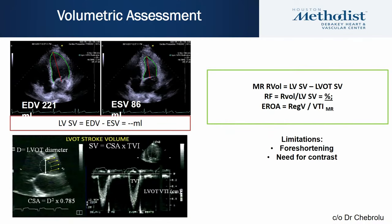Another volumetric method subtracts the LVOT stroke volume obtained by pulsed wave Doppler in the LVOT from the total stroke volume obtained by Simpson's biplane method. This is similar to the MRI method of evaluating MR. Limitations include foreshortening when apical windows are suboptimal and sometimes the need for contrast to obtain accurate volumetric assessment of the ventricle.